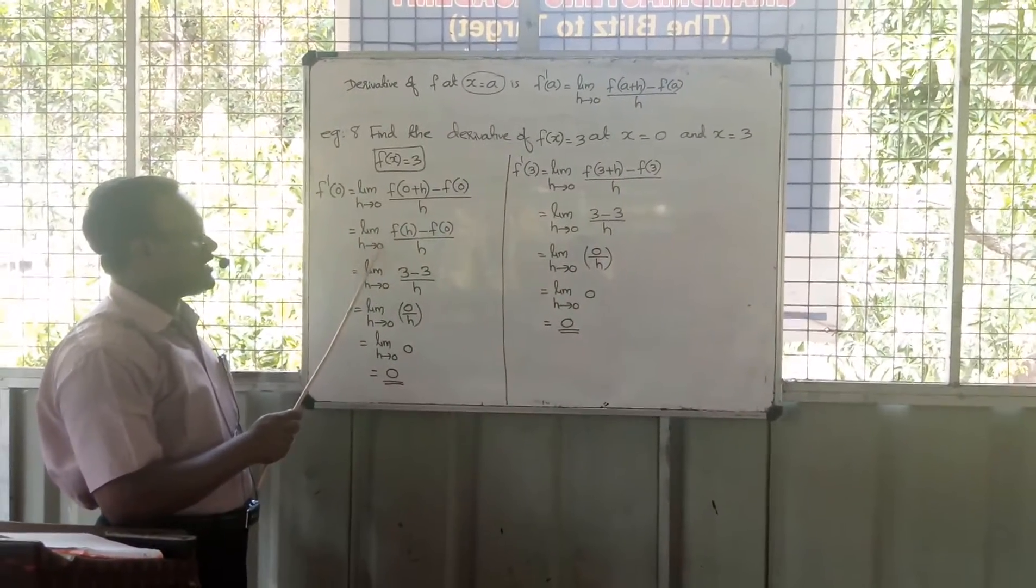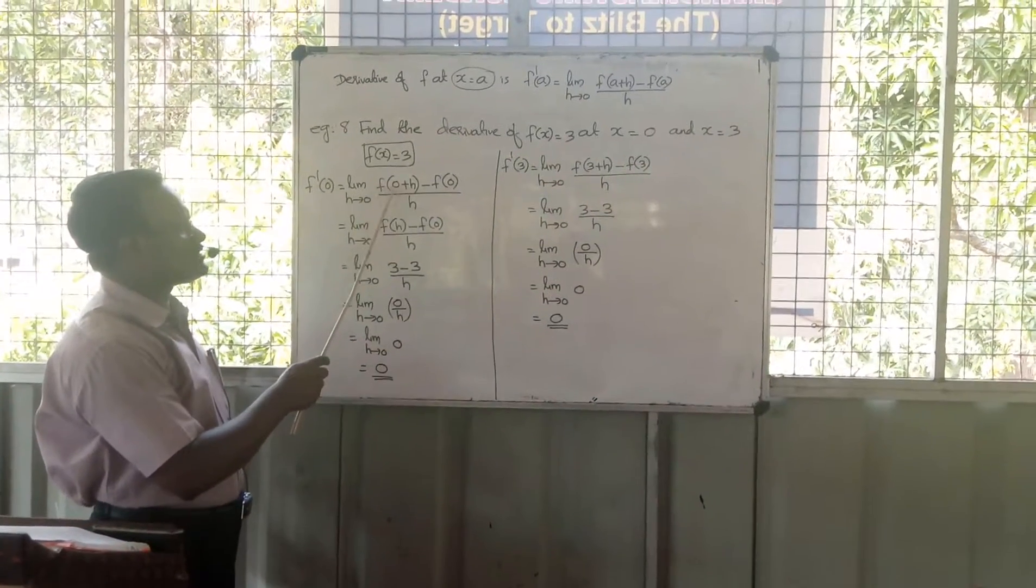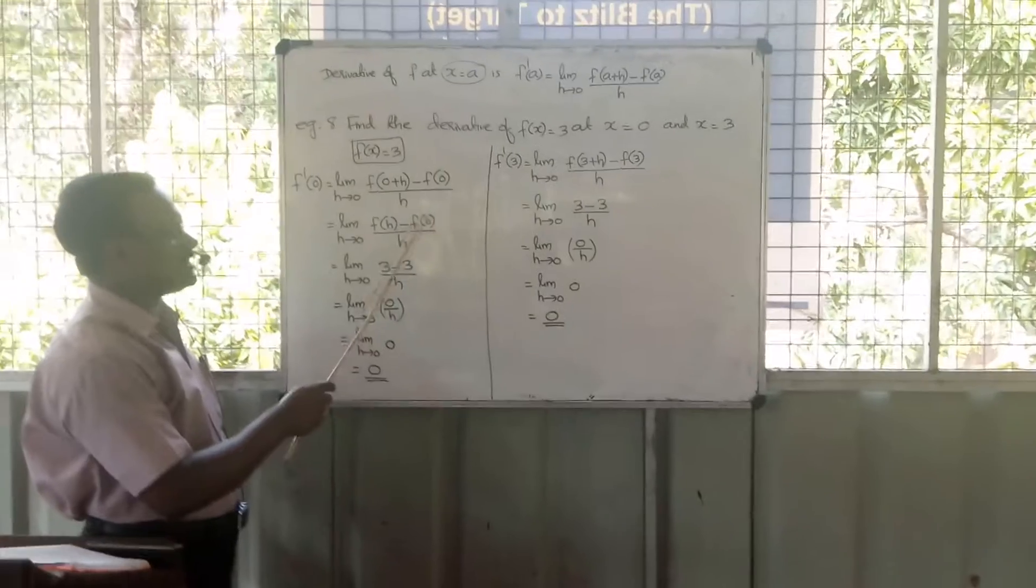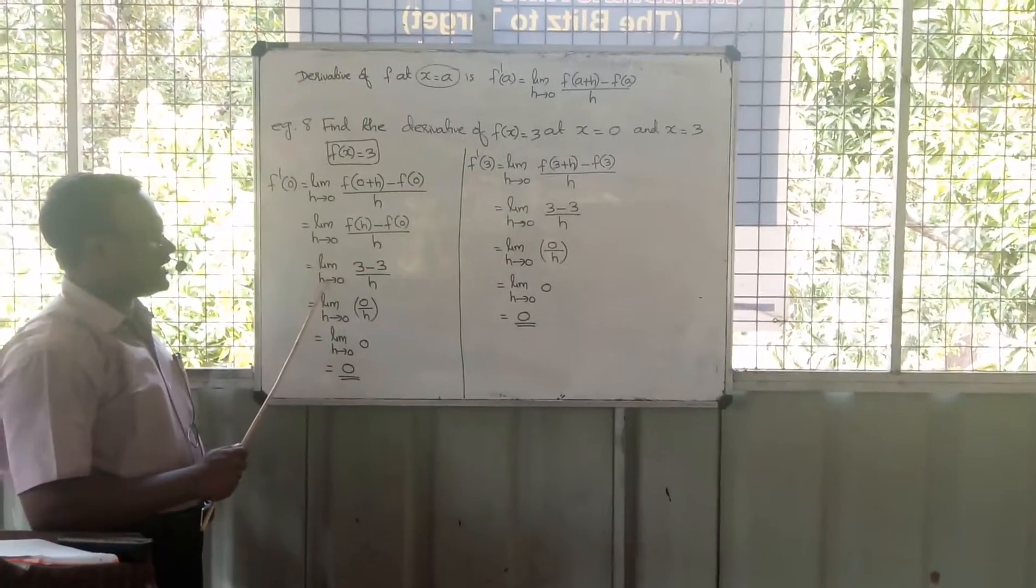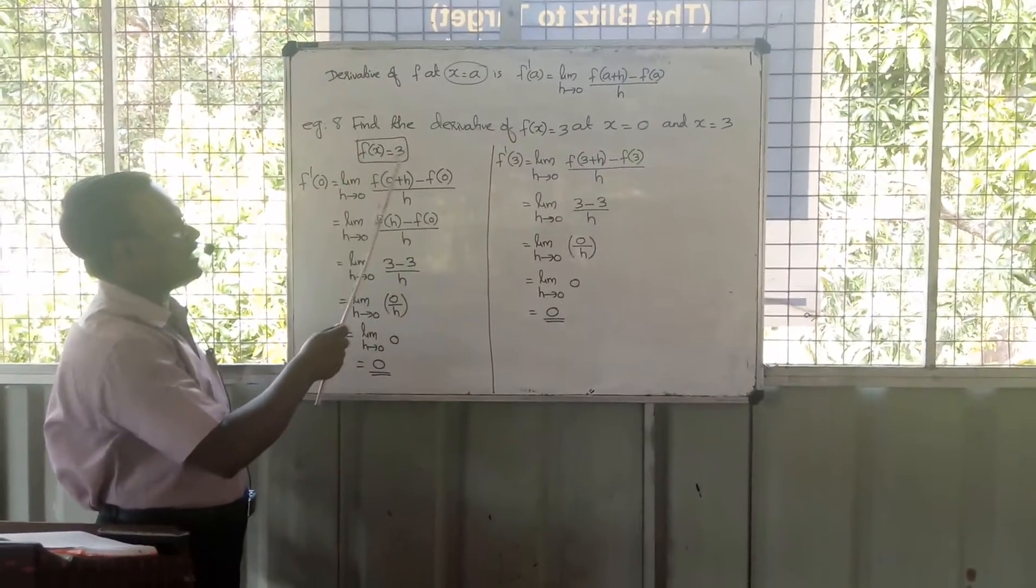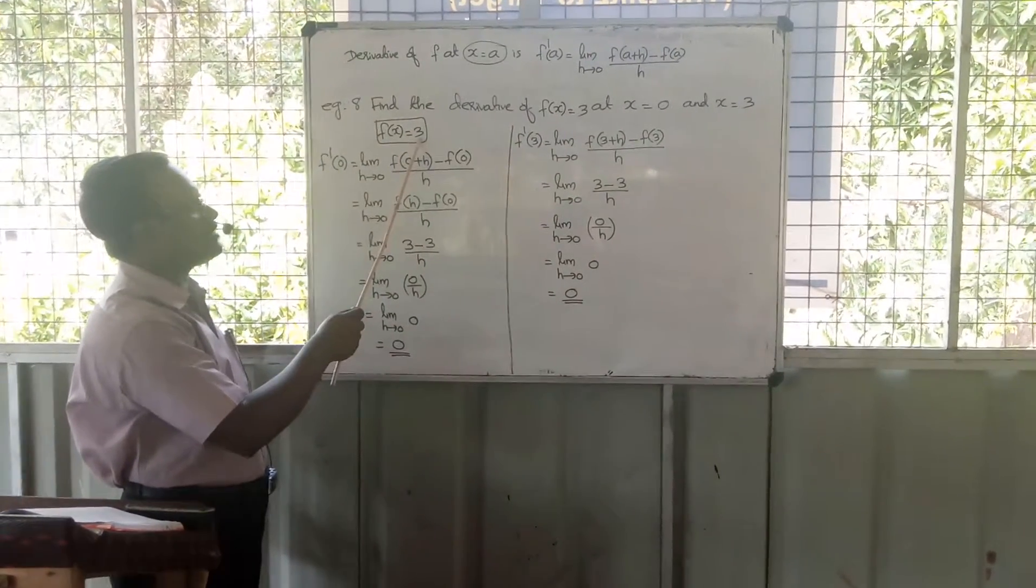Equal to limit h tends to 0, f(0 + h), which is f(h), minus f(0) by h. Equal to limit h tends to 0. f(x) = 3 is a constant function, so for any value of x, the answer is 3.